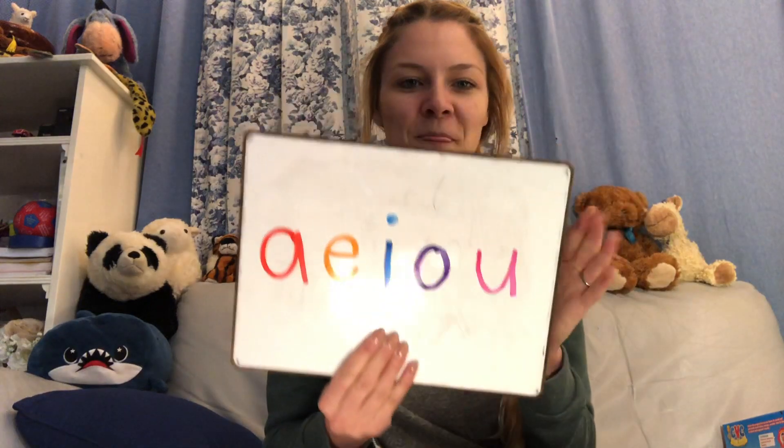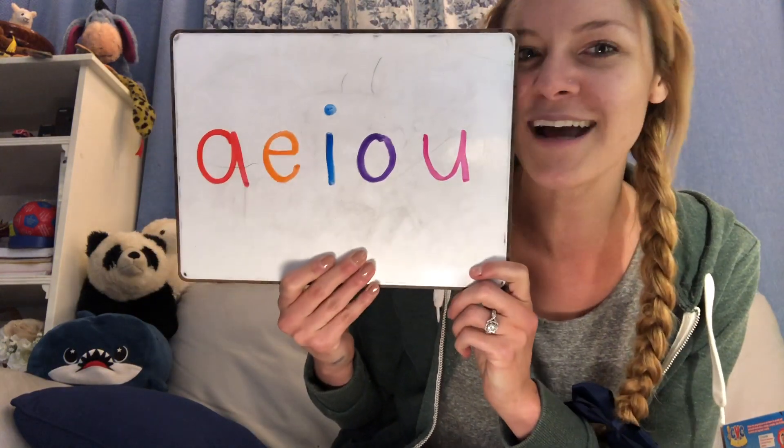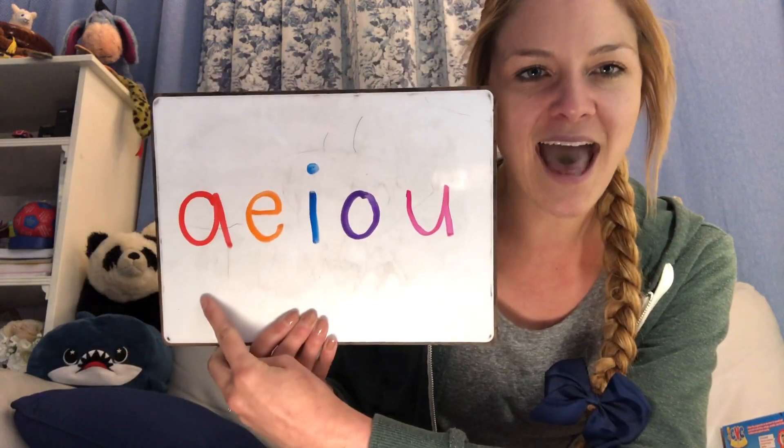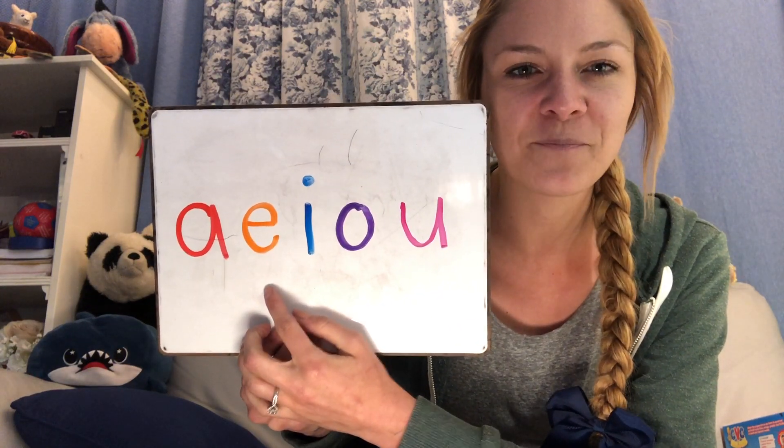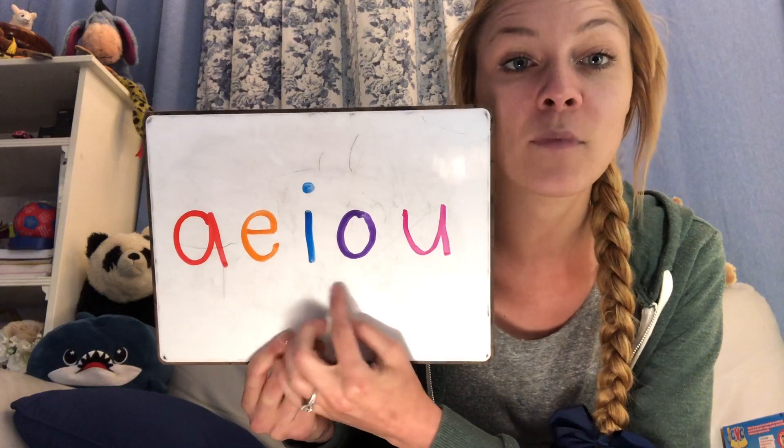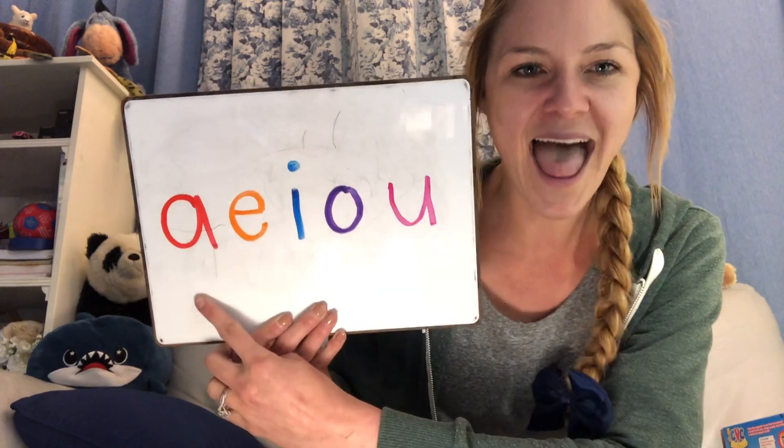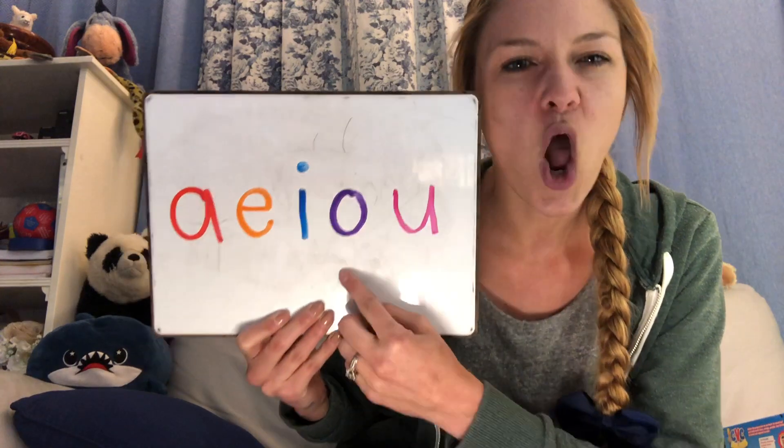The middle of a CVC word is the vowels, and I bet you can guess what the five vowels are. If you said A, E, I, O, and U, you are correct. The sounds in the middle of these CVC words are always the short vowel sounds: A, E, I, O, U.